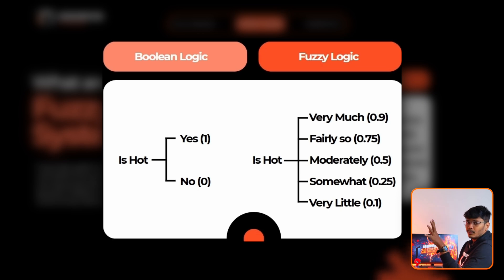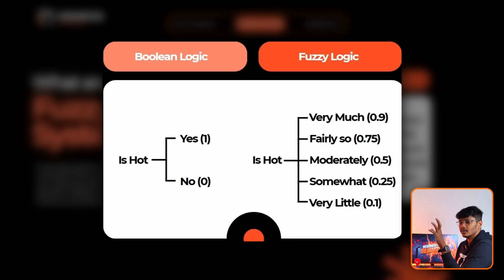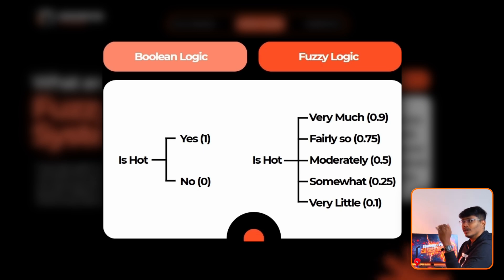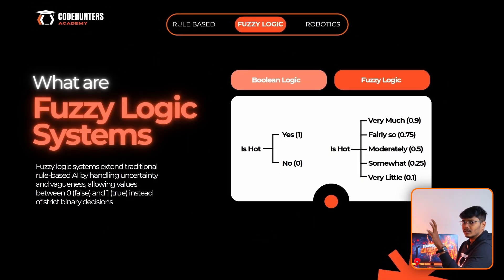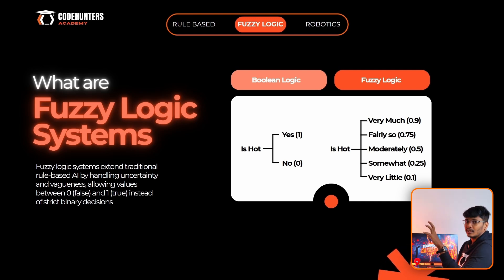For example, you have a heater. Your mother says, where is the heater? In a simple rule-based system it's just on or off, but with fuzzy logic you can add some ambiguity — degrees of warmth. When you need to handle that ambiguity, we use fuzzy logic systems. You can apply this to AC or a fridge as well.